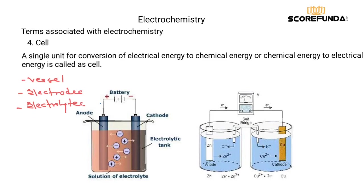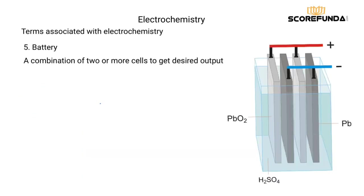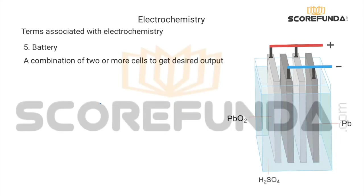Our last term associated with electrochemistry is battery. A battery is a combination of two or more cells connected in series or parallel to get a desired output. That's all in this session — thanks for watching, let's meet in the next session.